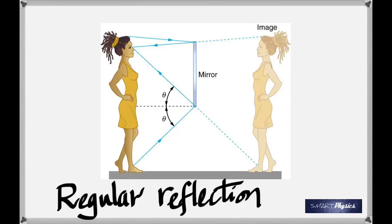Ask somebody to help you do that. It should be tailored to your height and your features. Then you have to find the minimum length of the mirror and how high it is from the ground. Whenever you look at an image, there are four properties — four properties of an image.